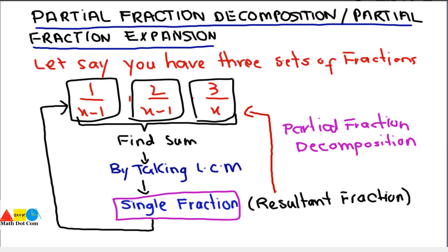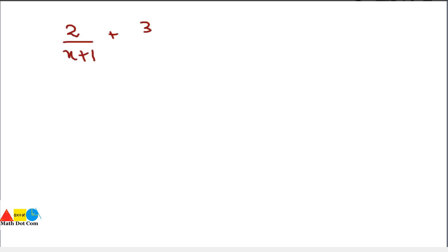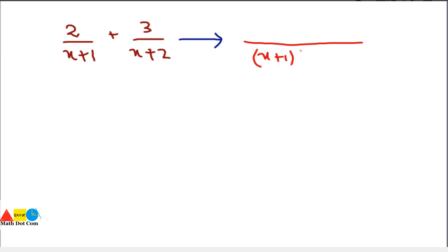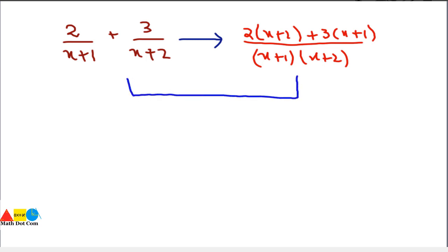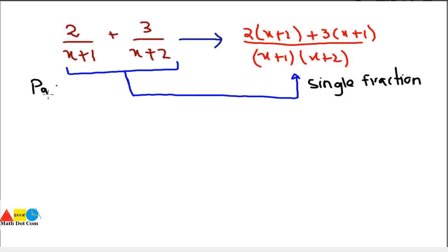This is the basic concept of partial fraction decomposition. For a clearer example: if you have the fractions 2 over x plus 1, plus 3 divided by x plus 2 — these are the individual fractions. If I want to find their sum, I take the LCM as (x plus 1)(x plus 2), then write 2 times (x plus 2) plus 3 times (x plus 1). By solving it, I get a single fraction — the resultant fraction. And 2/(x+1) and 3/(x+2) are the partial fractions we obtain after decomposition of the single fraction.